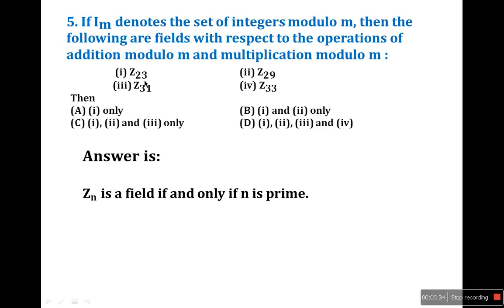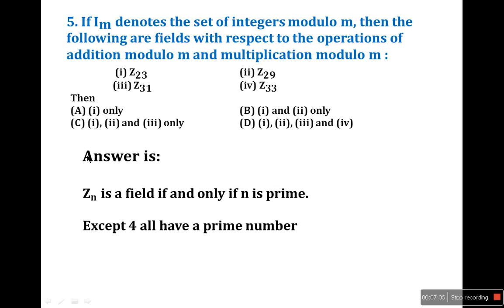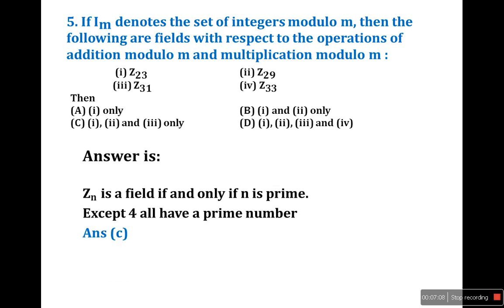Check each option: Z_23 — 23 is prime, yes. Z_29 — 29 is prime, yes. Z_31 — 31 is prime, yes. Z_33 — 33 is not prime because 33 is divisible by 1, 3, and 33. So the answer is options 1, 2, 3, which is C.